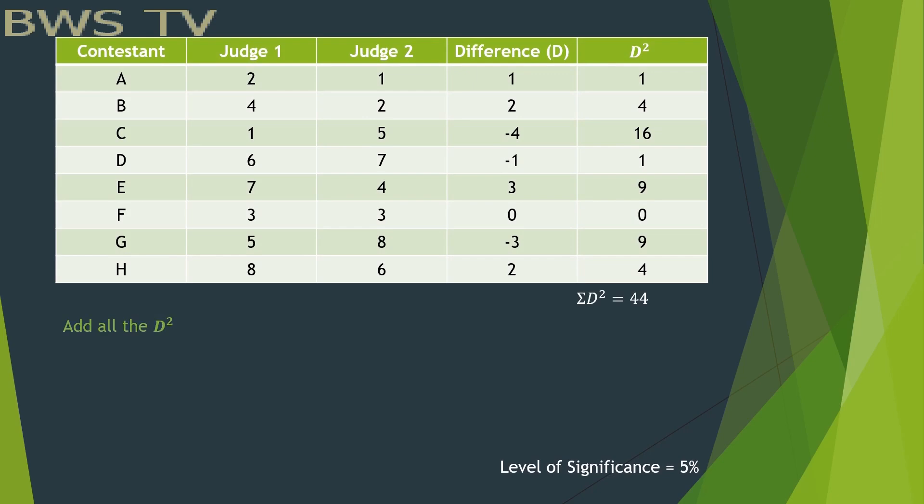Then we count the rows. The rows are considered as n. Since we have 8 rows, n is equal to 8. Now we make our null hypothesis, which would be there is no significant difference between judge 1 and judge 2.